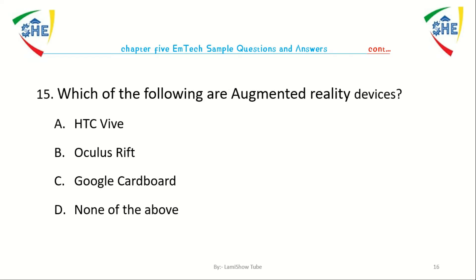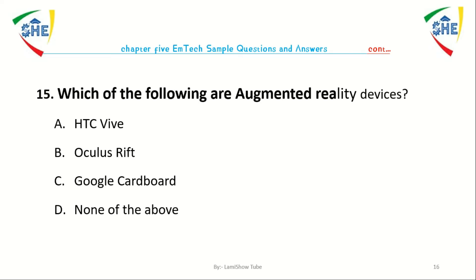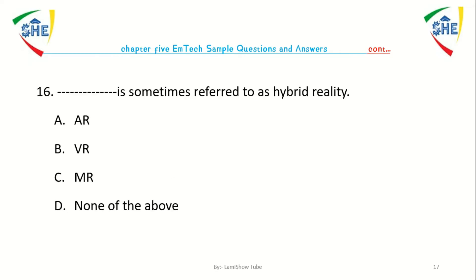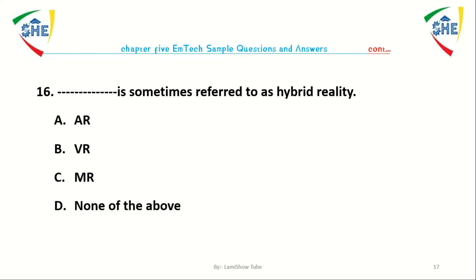Question number 15: Which one of the following are augmented reality devices? A) HTC Vive, B) Oculus, C) Google Cardboard, D) None of the above. Question number 16: Dash is sometimes referred to as hybrid reality. A) Augmented reality, B) Virtual reality, C) Mixed reality, D) None of the above.